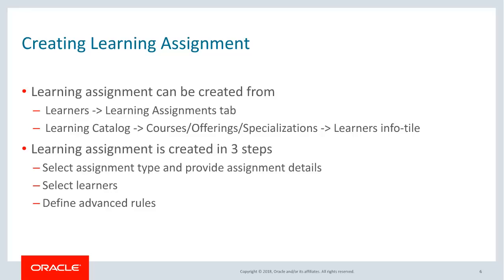Now that we understand what a learning assignment is, let's see how they are created. Specialists can create learning assignments from the administrator work area — either from the learners page and go to learning assignments, or from the learning catalog, go to the specific learning item and go to the learner's info tile. Then it is a three-step process: first, select the learning assignment type — voluntary, required, or recommend; then select individual learners or groups of learners; and lastly, define advanced rules.